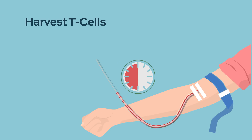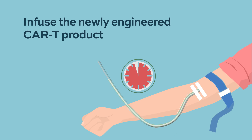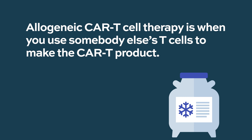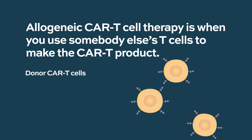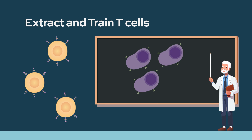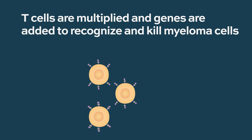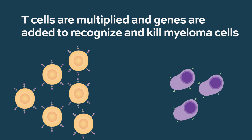With CAR T therapy, we take those T cells out, we train them, put them back into the patient, and that's where they go after the plasma cells and control the multiple myeloma. We have to add a gene to these T cells to make them recognize plasma cells as malignant cells and go after those plasma cells.